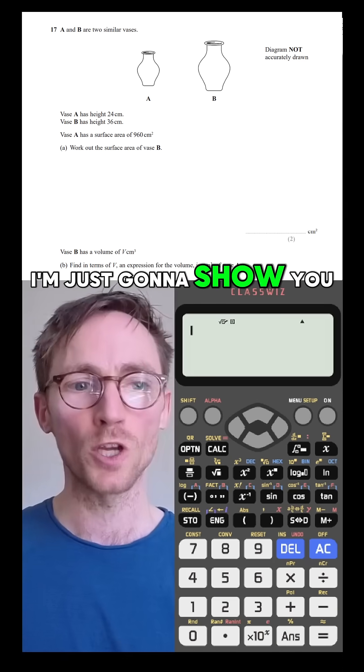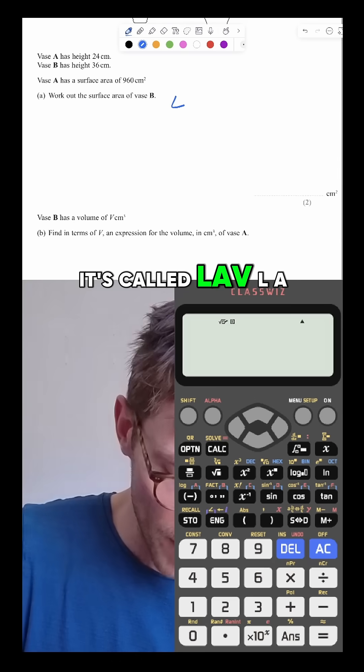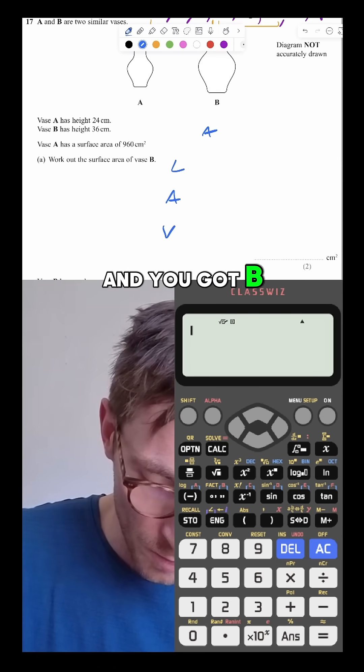This particular thing is actually really annoying. I'm just going to show you my technique really quickly. It's called LAV. You have A and you've got B here.